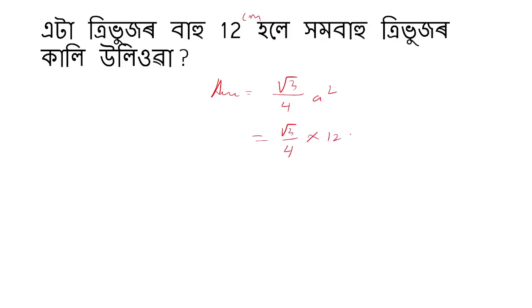So root 3 by 4 into 12 squared — 12 times 12 is 144, divided by 4 gives 36. So the area is 36 root 3 centimeters squared.